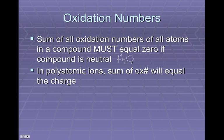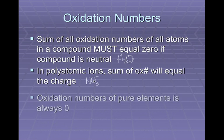Let's go back to water. Water doesn't have a charge — it's a neutral compound. So the oxidation numbers of all the hydrogens plus all the oxidation numbers of the oxygens have to add up to zero. Whereas if we have a polyatomic ion like nitrate, which has a -1 charge, then the oxidation number of the nitrogen plus the oxidation numbers of the oxygens are going to add up to -1. We'll do some examples of that in a sec.